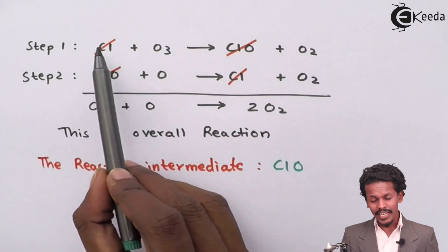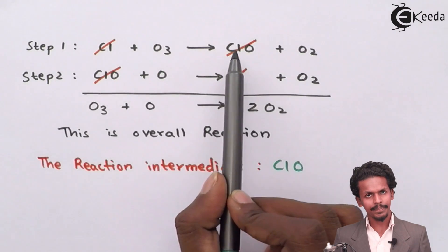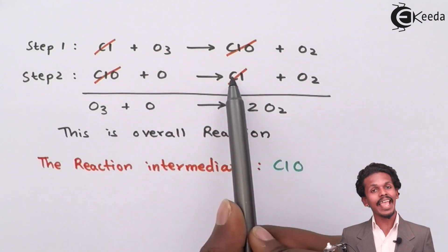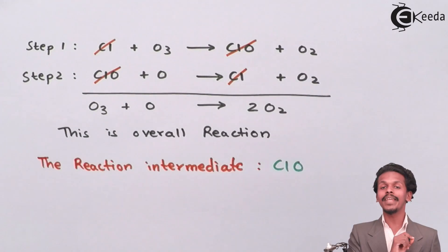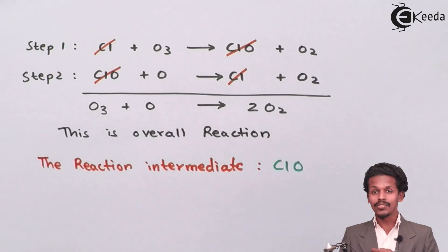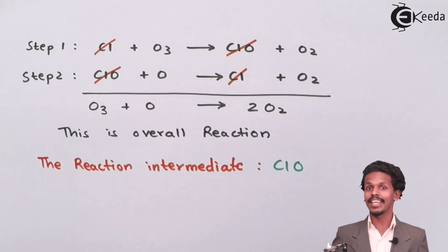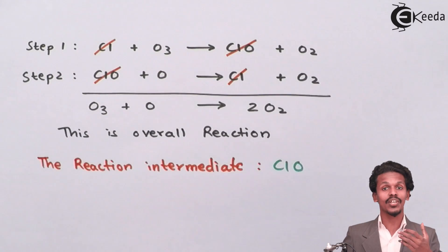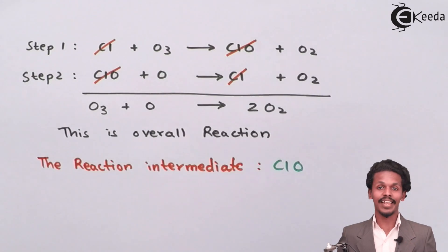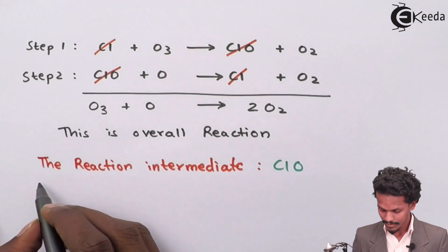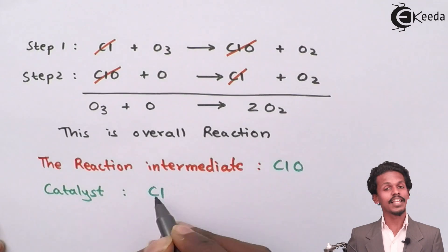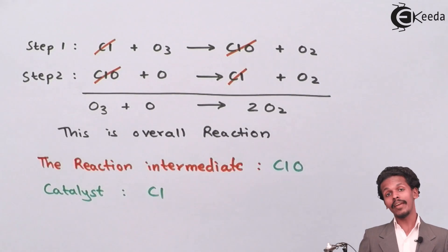Looking at Cl: it is consumed as a reactant in step one to form the intermediate ClO, and then it is regenerated as a product in step two. Since Cl is not consumed in the overall reaction — it is regenerated — it is acting as a catalyst. Catalysts are substances that are regenerated after the reaction, resulting in a higher rate of reaction.